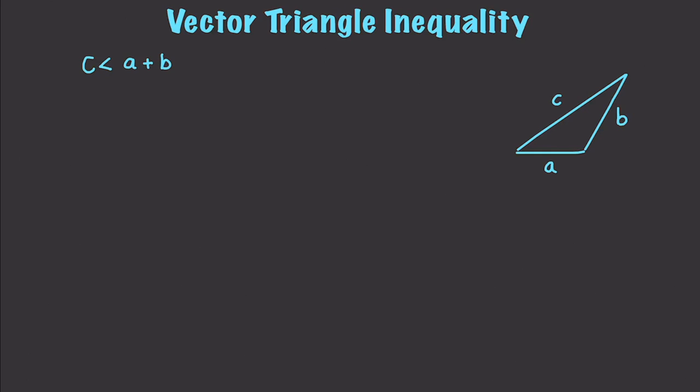Now, technically, C could actually be equal to A plus B, but that would only be if A and B smooshed up and actually became C. And how this would translate with vectors is we could have the magnitude of Vector A plus Vector B is less than or equal to the magnitude of Vector A plus the magnitude of Vector B.